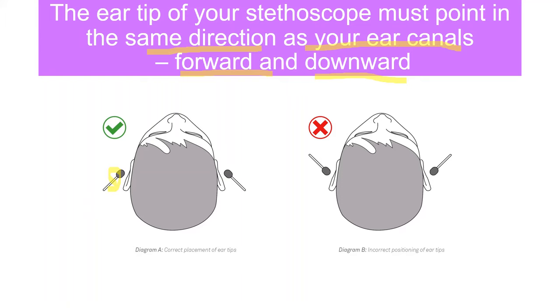Here you can see the eartip is pointing forward and downward, which is the correct method of placing the eartips on the ear. This is the wrong way. It shouldn't be placed in the opposite direction. This is the right way of placing it, forward and downward, the same direction as your ear canals.